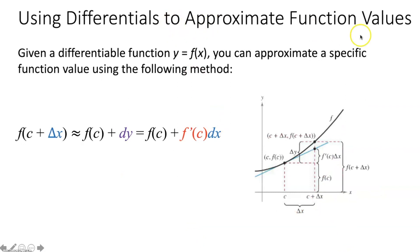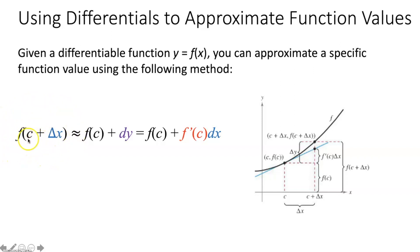Now let's talk about using differentials to approximate function values. Given the differentiable function y = f(x), you can approximate a specific function value using: f(c + delta x) ≈ f(c) + dy = f(c) + f′(c)dx. When we talked about the tangent line approximation, c would be our integer like 1, and c + delta x would be that 1.1 we're trying to approximate at. So delta x would be 0.1 — the distance c is away from c + delta x.